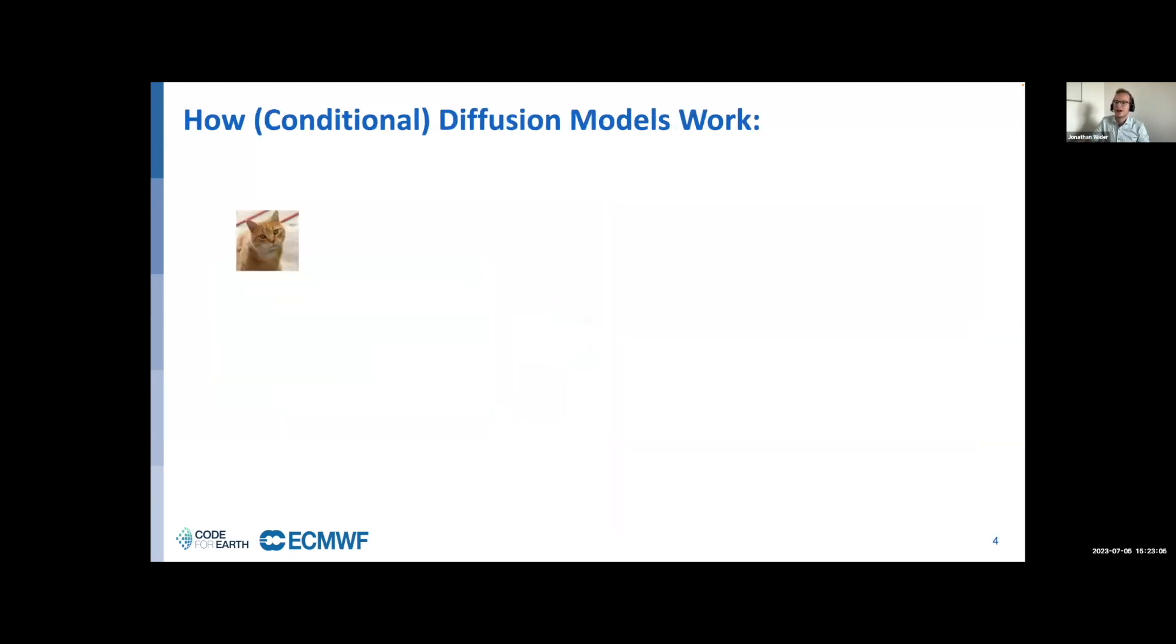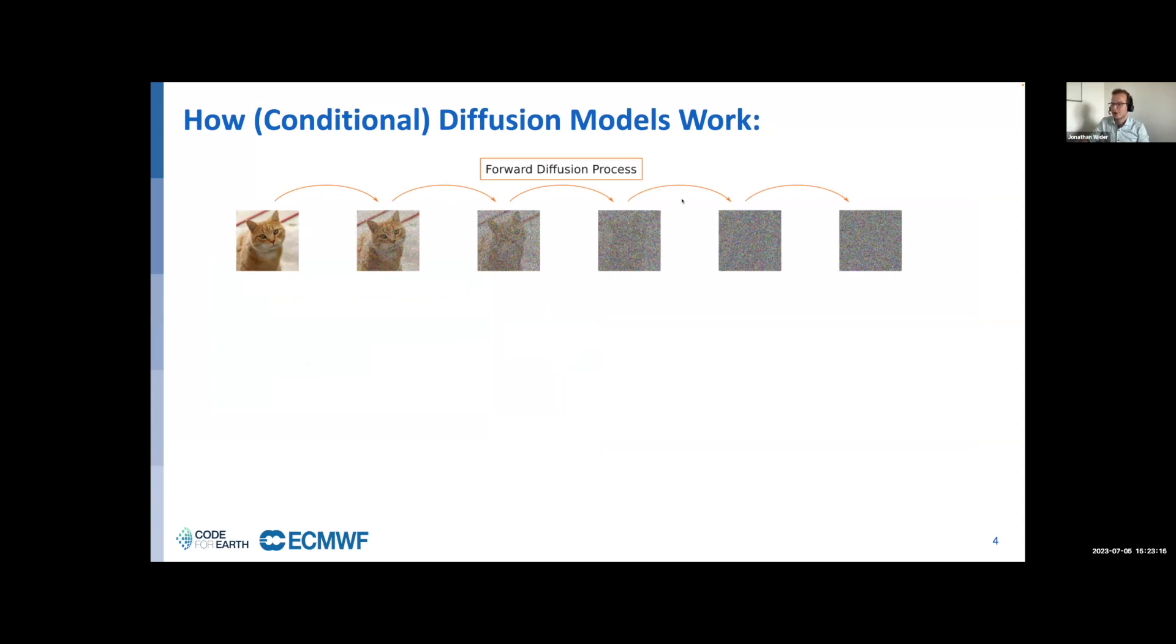Before I describe in more detail how we do this, it's worth spending some time on how diffusion models work. If we have an image in our training set, we add various or increasing amounts of Gaussian random noise. Because this addition of Gaussian random noise is somewhat similar to diffusion, this whole class of machine learning models is called diffusion models. What we're interested in is not to go from a cute looking cat to random noise, but from random noise to step by step build up some good looking image.